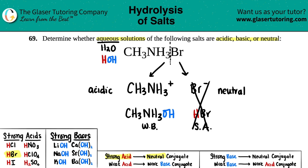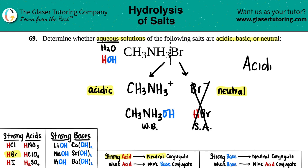So we have acidic combined with neutral — and acid plus neutral gives us acidic. Therefore, this salt is acidic. I really hope this helped. Let me know in the comments, and if you want to help us out please press the subscribe button. Thank you so much, and I'll see you in later lessons!